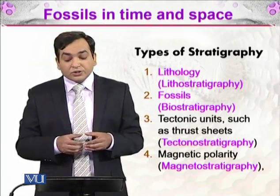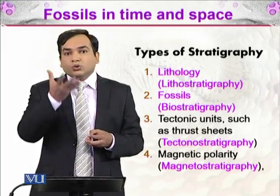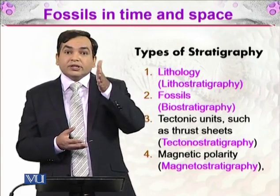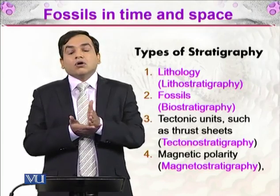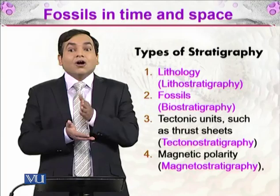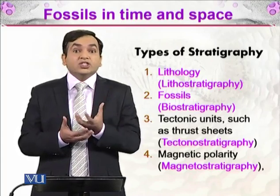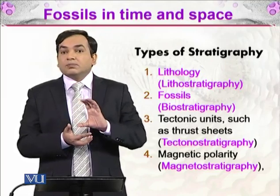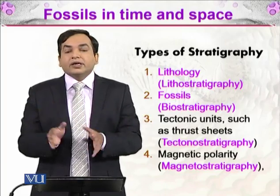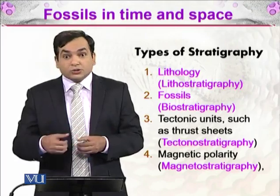There is also magnetic polarity stratigraphy, called magnetostratigraphy. When volcanic activity happens, ash containing small magnetic particles goes into the air. When these particles deposit on the earth, they align along the earth's polarity at that time. Since the earth's magnetic polarity changes over time, by studying the polarity of volcanic ash deposits, you can assess the age of fossils and rocks.